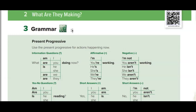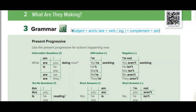Present continuous. The rule is as follows: Subject — فاعل — plus am, is, or are, plus the main verb in the ing form, plus a complement — ظرف. The complement indicates something happening now, for example the word 'now.' This is the rule for the affirmative.